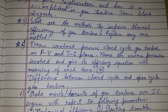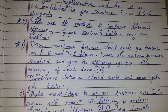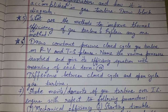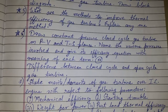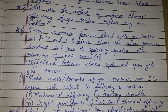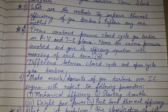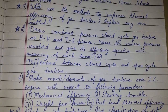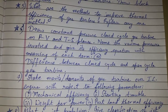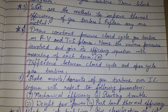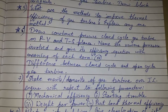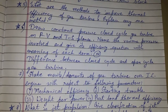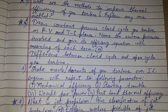Differentiate between closed cycle and open cycle gas turbine. State the merits and demerits of gas turbine over IC engine with respect to the following parameters: mechanical efficiency, starting trouble, weight per power, part load, and thermal efficiency.